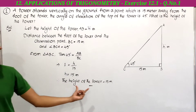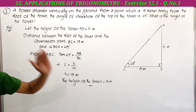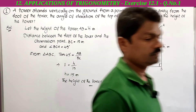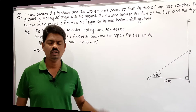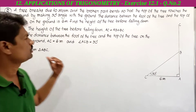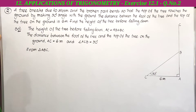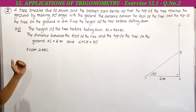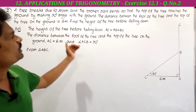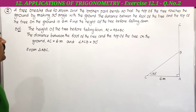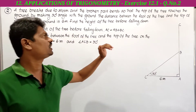Therefore the height of the tower is equal to 15 meters. This is the first problem. Next we solve the second problem from Exercise 12.1. A tree breaks due to a storm and the broken part bends so that the top of the tree touches the ground making a 30 degree angle with the ground. The distance between the foot of the tree and the top of the tree on the ground is 6 meters. Find the height of the tree before falling down.